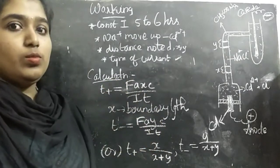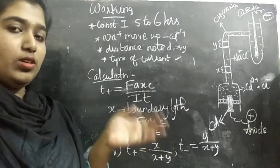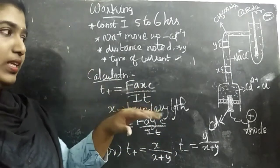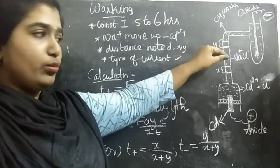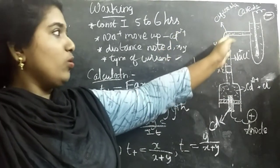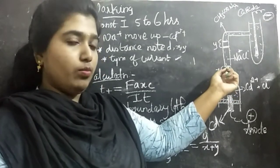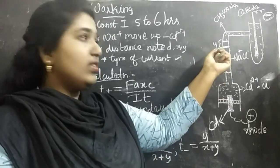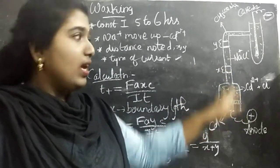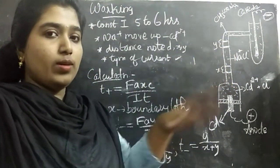Now we will go to the working of this moving boundary method. After setting up the apparatus, we will pass constant current for about 5 to 6 hours. The electrolysis will occur inside and slowly the sodium plus, that is NaCl, will gradually move upwards and cadmium chloride follows it. Similarly, the sodium acetate will also move upwards. Here occurs a shift in the boundary. Previously the boundary was here and it moved a little bit upwards. We represent the distance as x and the distance moved above as y. This distance helps to calculate the transport number for the cation, and this distance helps to calculate the transport number for the anion.